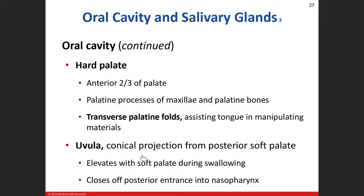The uvula is that cone-like projection hanging down from the posterior portion of the soft palate. When doctors test the gag reflex they aim for the uvula — stimulating it by touching the posterior tongue with a tongue depressor. The gag reflex can also be elicited by brushing too far back on the tongue.